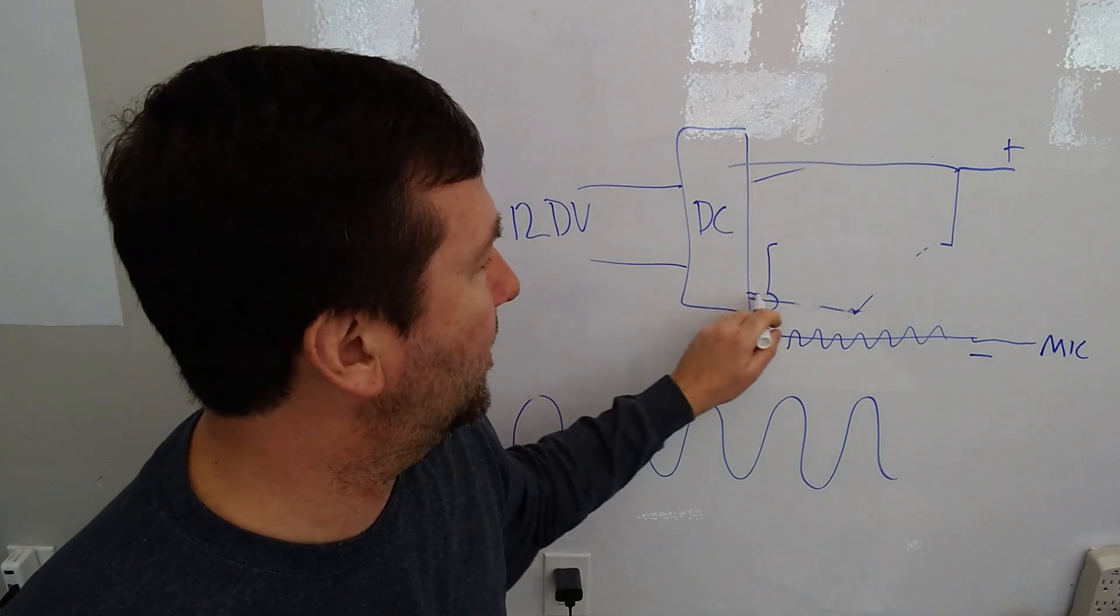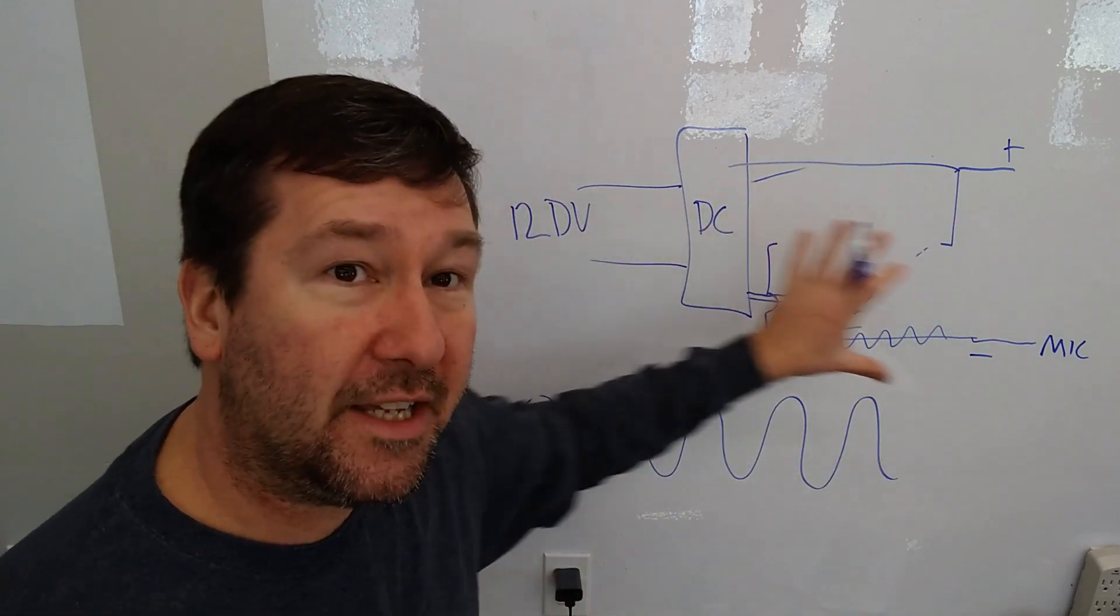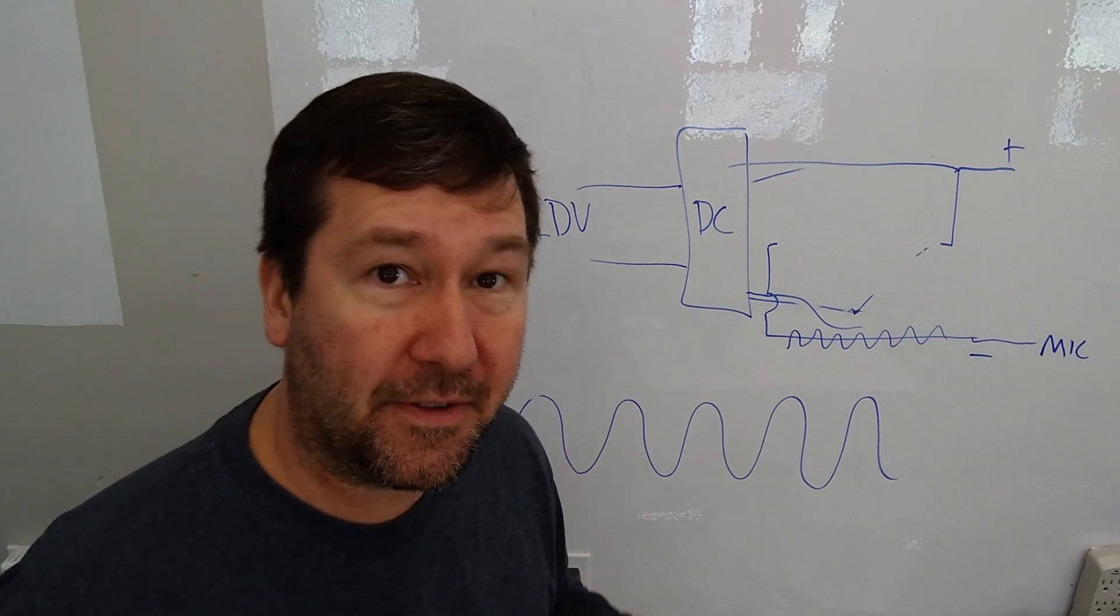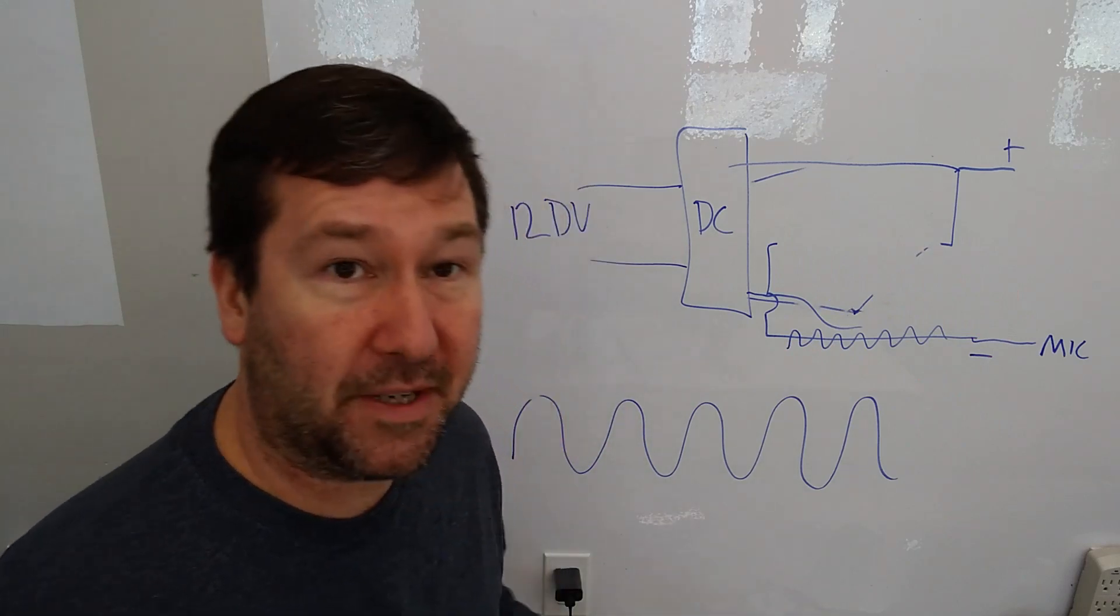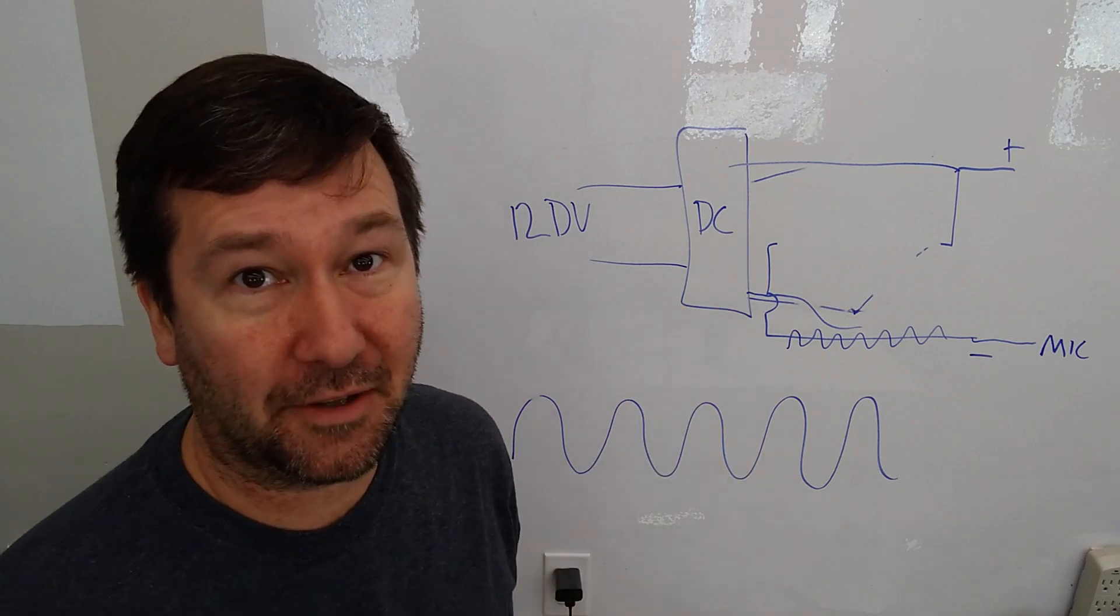And then we have plus and minus coming out of it. So there is no changing magnetic field in DC. So there is no voltage that can be picked up with a non-contact voltage sensor.